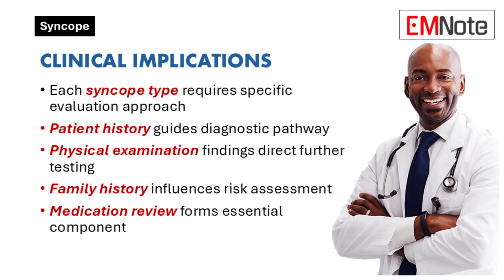Each type of syncope demands a tailored evaluation strategy, beginning with a thorough patient history to identify the diagnostic pathway and potential triggers. A detailed physical examination provides critical insights that guide the need for further testing, while family history helps assess inherited risks such as arrhythmias or congenital heart conditions. Additionally, reviewing the patient's medications plays a pivotal role in identifying drugs that may contribute to or exacerbate syncope episodes.